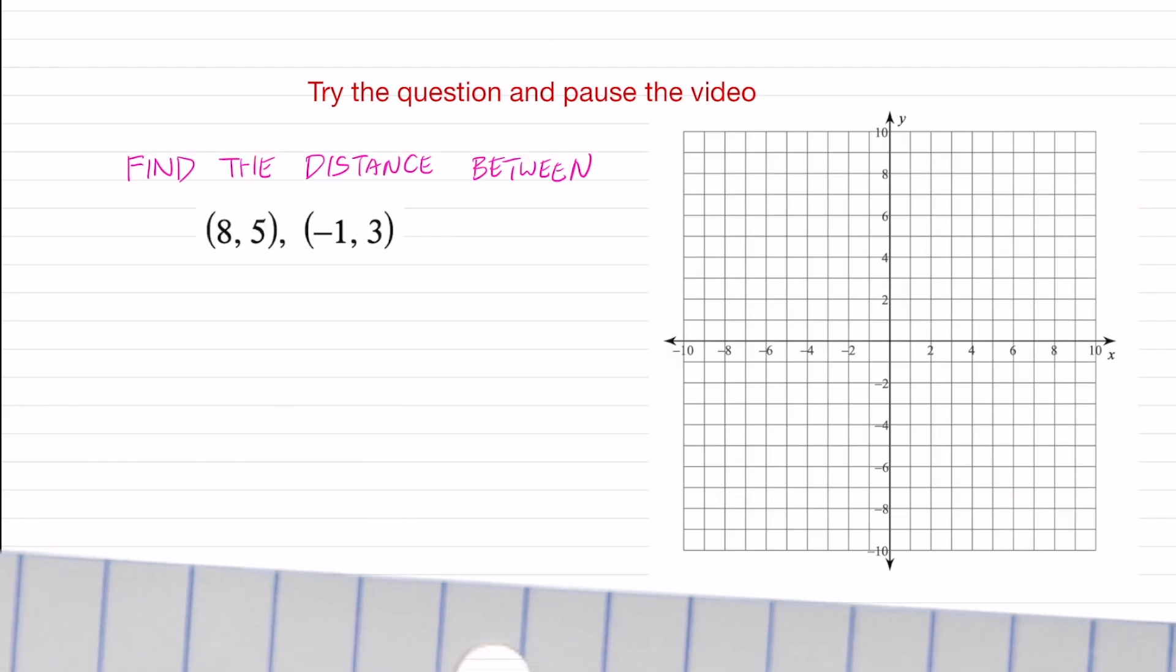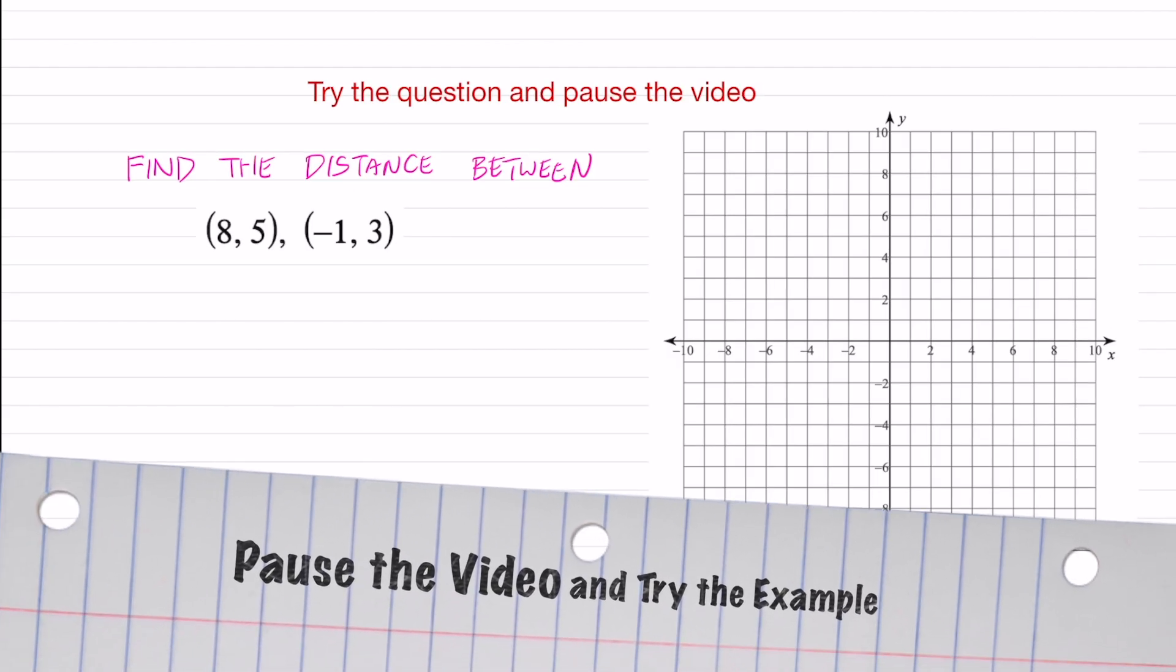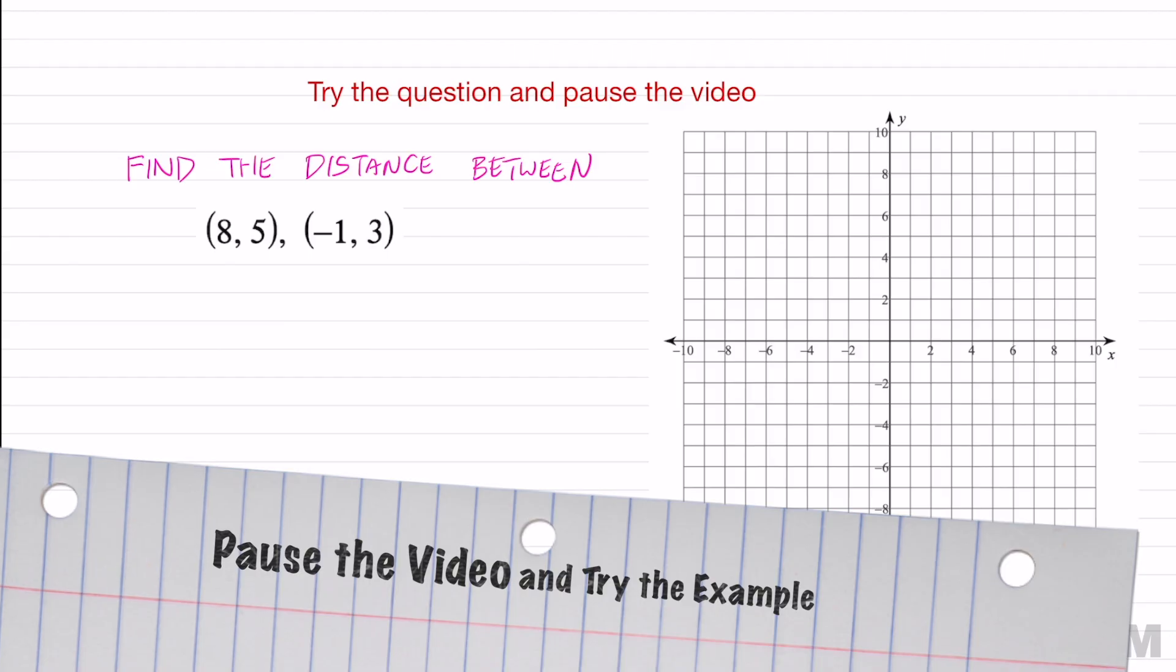Alright, I want you guys to try this question out. Maybe get a piece of graph paper, graph it and find the distance between those two points. Draw your right triangle and use the Pythagorean theorem. When you are done with this problem, just unpause the video for the answer.